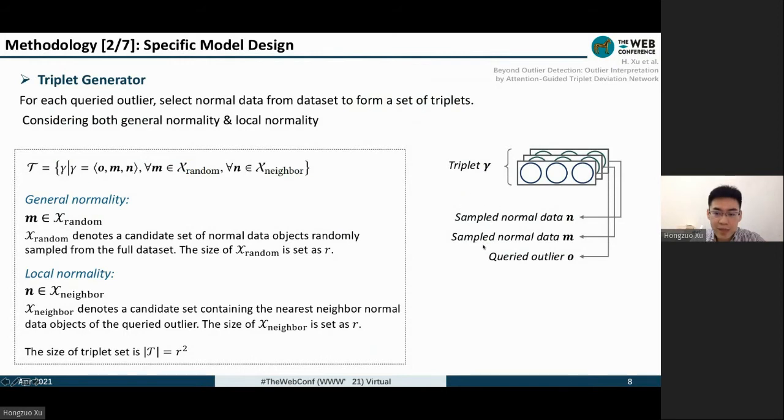As for the other two positions, we simultaneously consider both general normality and local normality. Two candidate sets are formed. X_random denotes normal data objects randomly sampled from the full dataset, and X_neighbor denotes a set containing the nearest neighbor normal data of the query outlier.